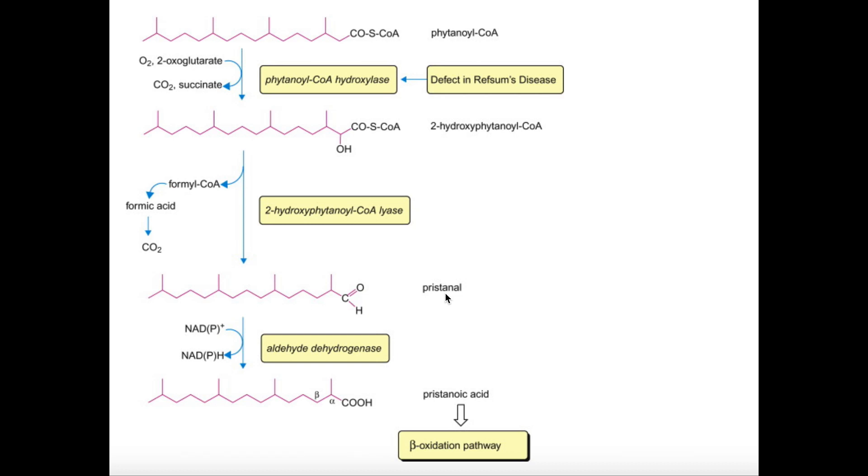But by oxidizing this alpha carbon into an aldehyde, we now have pristanal. Now, pristanal can then be oxidized into pristanoic acid. So this is an aldehyde right here. We can simply oxidize that into a carboxylic acid. And we have this molecule right here, which is pristanoic acid.